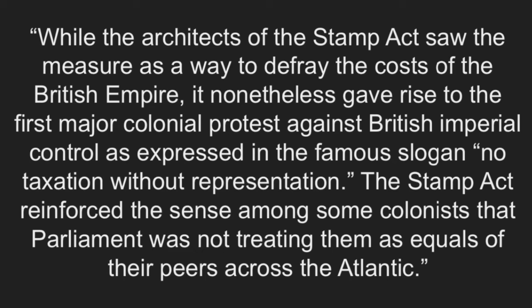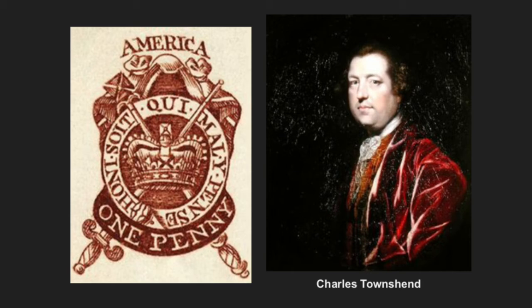While the Stamp Act was eventually repealed after months of protesting, the colonists' strife didn't end there. Britain continued to impose new taxes upon the colonists without their representation in British parliament, and created acts such as the Quartering Act, which required that British troops in the colonies must be housed, and the Townshend Act, which placed a tax on multiple goods that were frequently imported by the colonies. These unjust taxations and responsibilities placed upon the colonists caused them to begin to resist British rule.